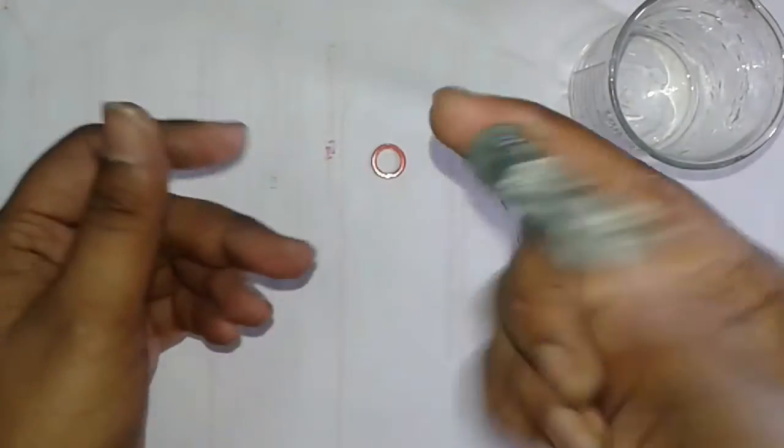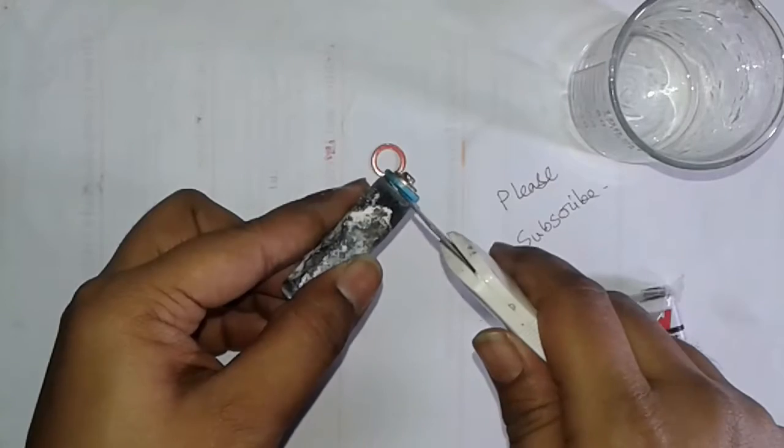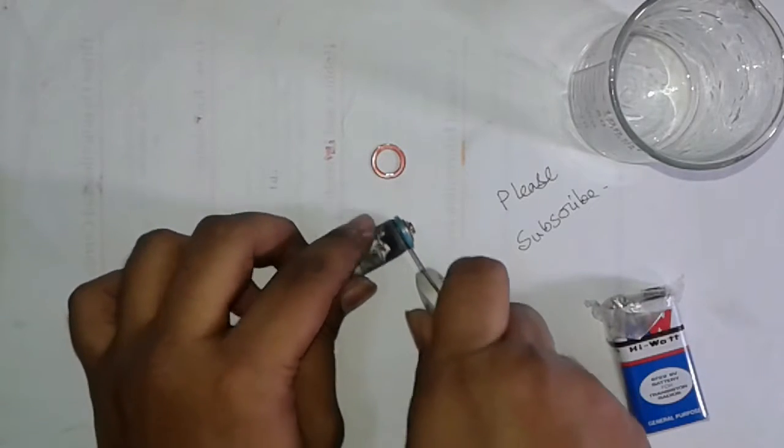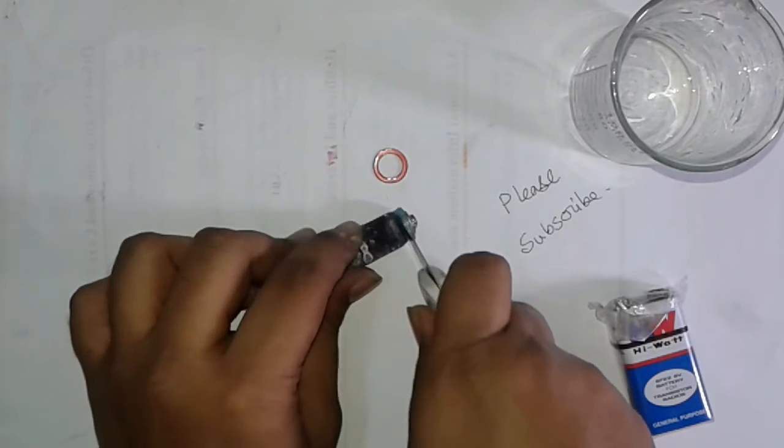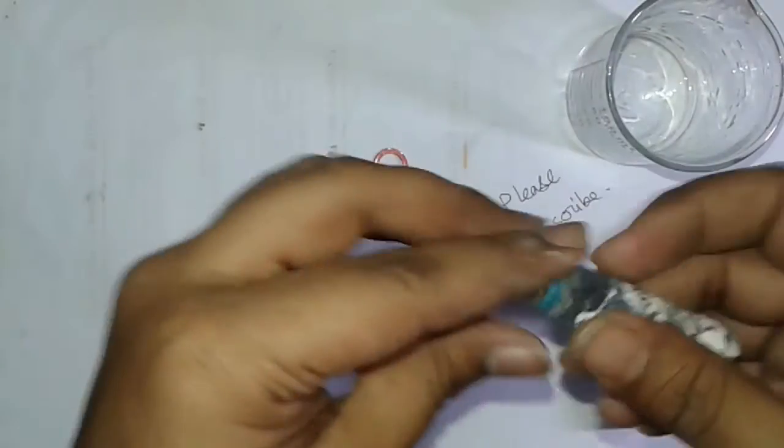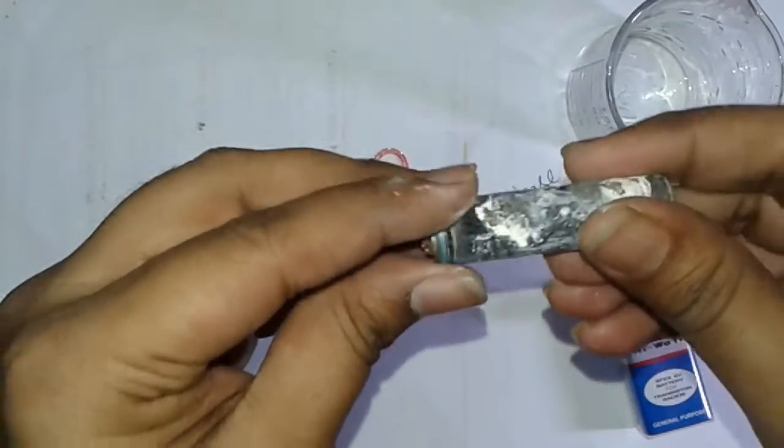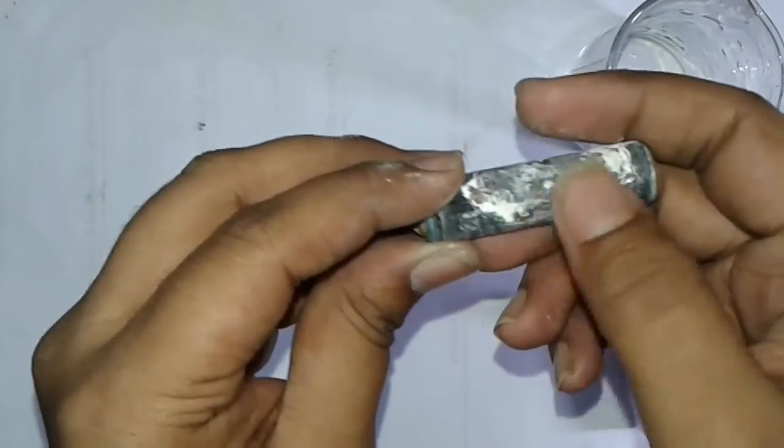After cutting that, you will get this type of thing. Then cut the upper portion of it. You will get this out. Then rotate it very smoothly so that the electrode does not break inside.